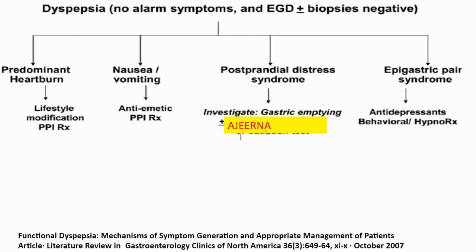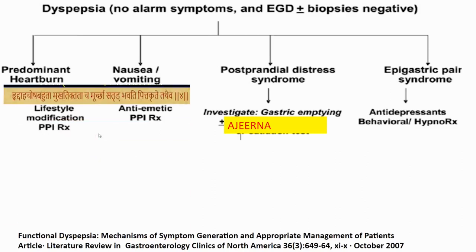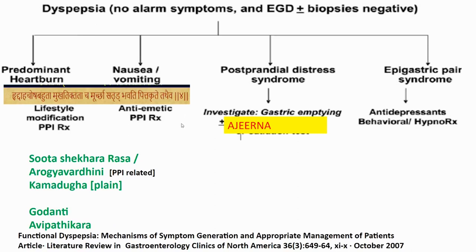The guideline treatment for predominant heartburn is lifestyle modification and proton pump inhibitors. From our point of view, both heartburn and nausea are typical Pittaja involvement, and my treatment is Sudha-Shekara and Kamaduga. One important issue is persons on proton pump inhibitors nowadays consume them as over-the-counter products quite commonly. Persons who take proton pump inhibitors regularly tend to have rebound symptoms — either when they withdraw or even after regular intake. Such patients often end up in Ayurvedic conditions. In such conditions, considering the Pitta variety, my prescription gives very gratifying results.